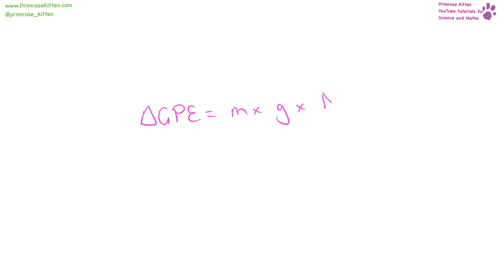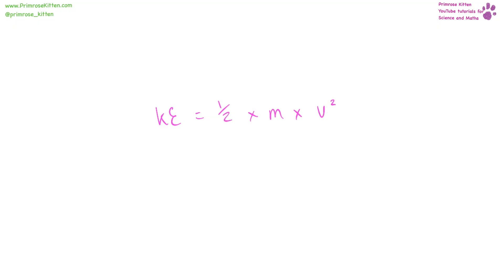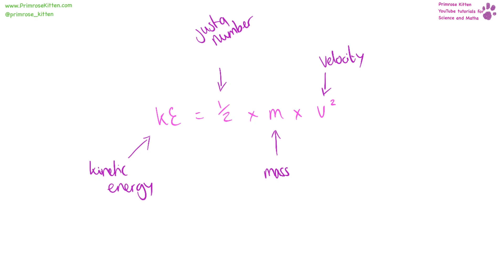If we want to work out the change in gravitational potential energy, that is equal to mass times gravity times change in height. Gravitational potential energy is measured in joules, mass is measured in kilograms, gravity is 10 newtons per kilogram, and height is measured in metres. To work out kinetic energy, that is half times mass times velocity squared, with kinetic energy measured in joules, mass in kilograms, and velocity in metres per second. It is important to note that it is just the velocity that is squared, not the whole thing.